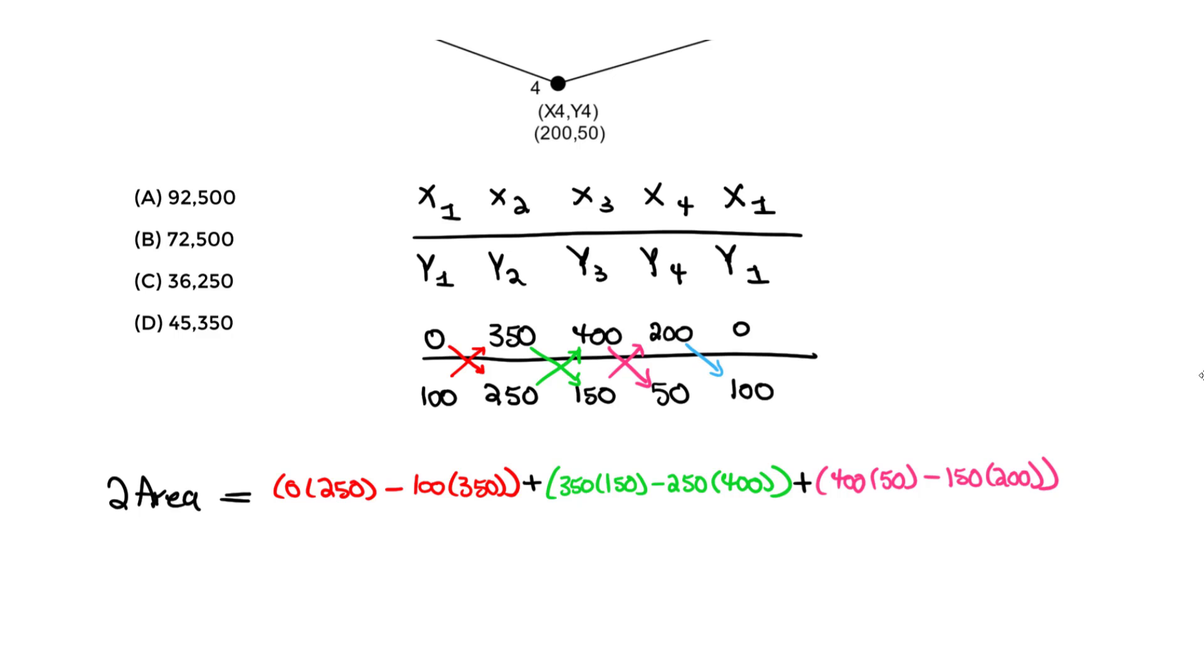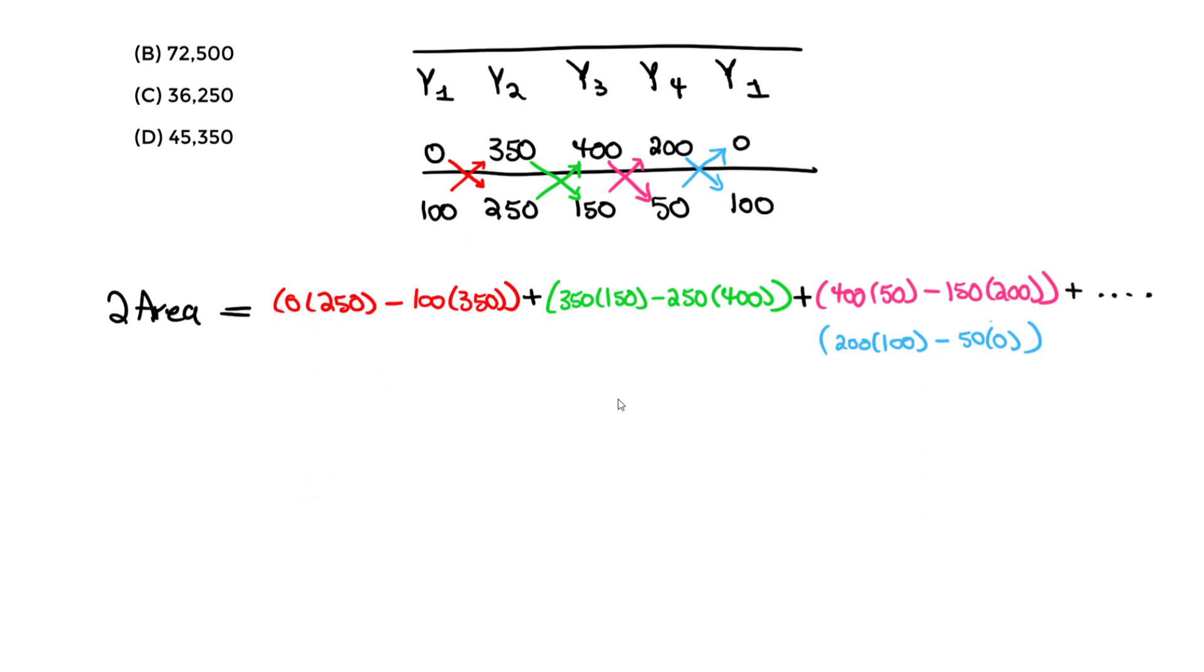So we do plus this value of 200 times 100, and we do minus, don't forget it's always minus, 50 times 0, and close that. That is going to be always what you do, and we know at the end we're going to take that whole value, which is essentially the value on top in the FE handbook using that equation, divided by 2. So let's do the math for all of this.